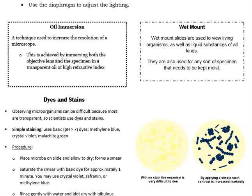A technique used to increase the resolution of a microscope is called oil immersion. This is achieved by immersing both the objective lens and the specimen in a transparent oil of high refractive index. Wet mount slides are used to view living organisms as well as liquid substances of all kinds. They are also used for any sort of specimen that needs to be kept moist.